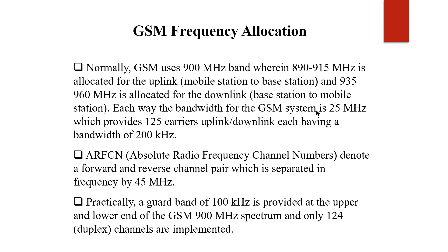The 25 MHz uplink and downlink spectrum is distributed across 125 frequencies, and each of those 125 frequencies has a 200 kHz bandwidth.